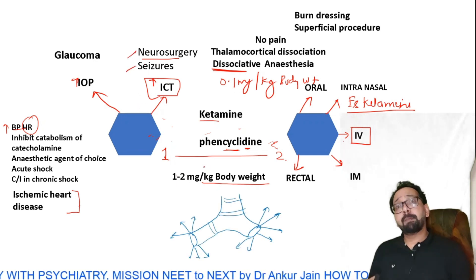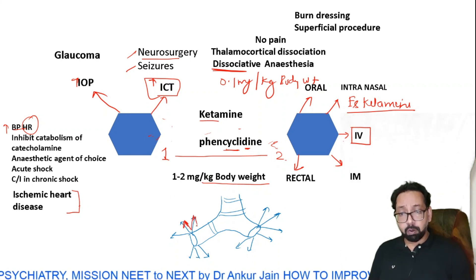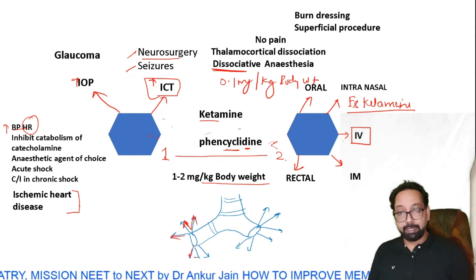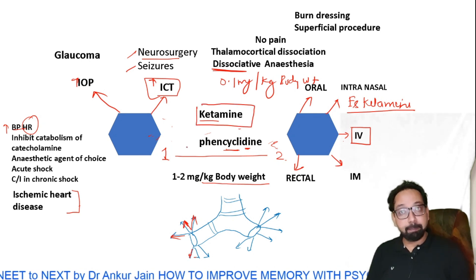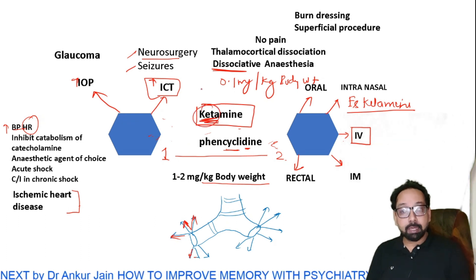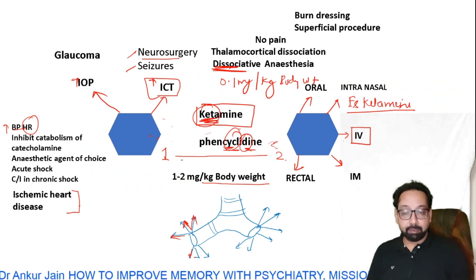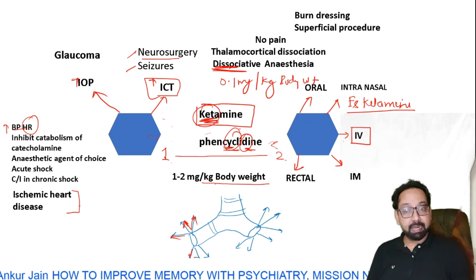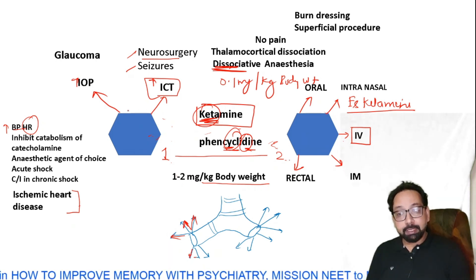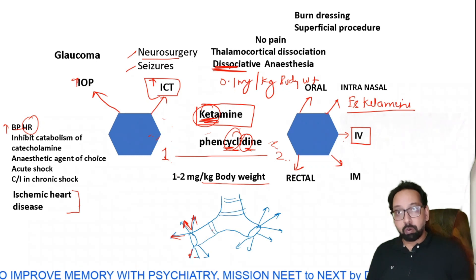Ketamine is the best bronchodilator — it stretches the bronchus in all directions. To summarize the memory map: ketamine produces dissociative anesthesia; it is a phencyclidine derivative with two cyclical structures; dose is 1 to 2 mg/kg; multiple routes of administration; increases all pressures of the body; and it is a bronchodilator.